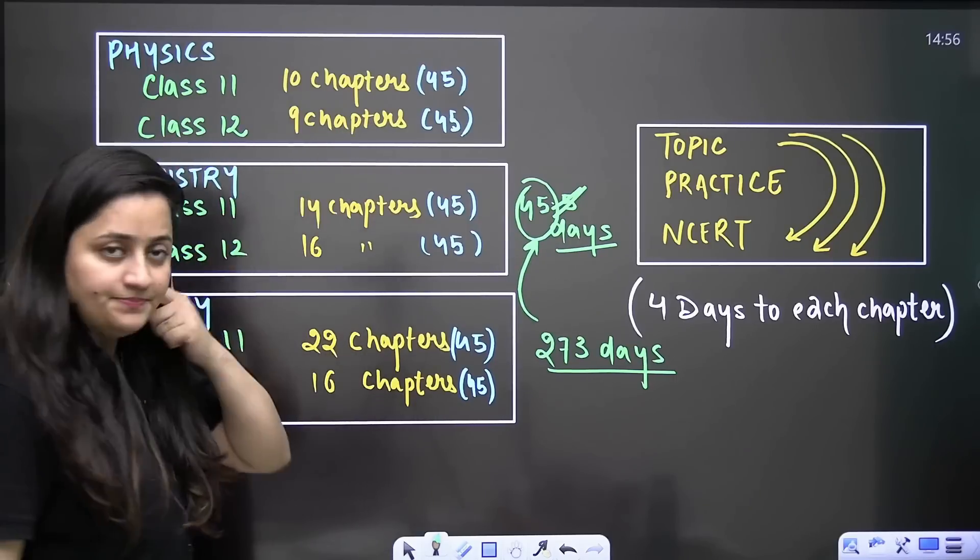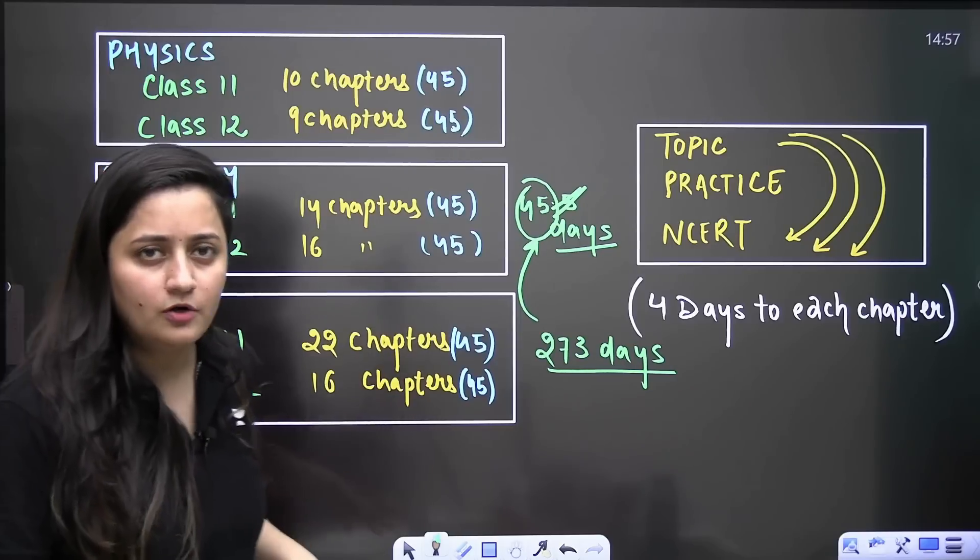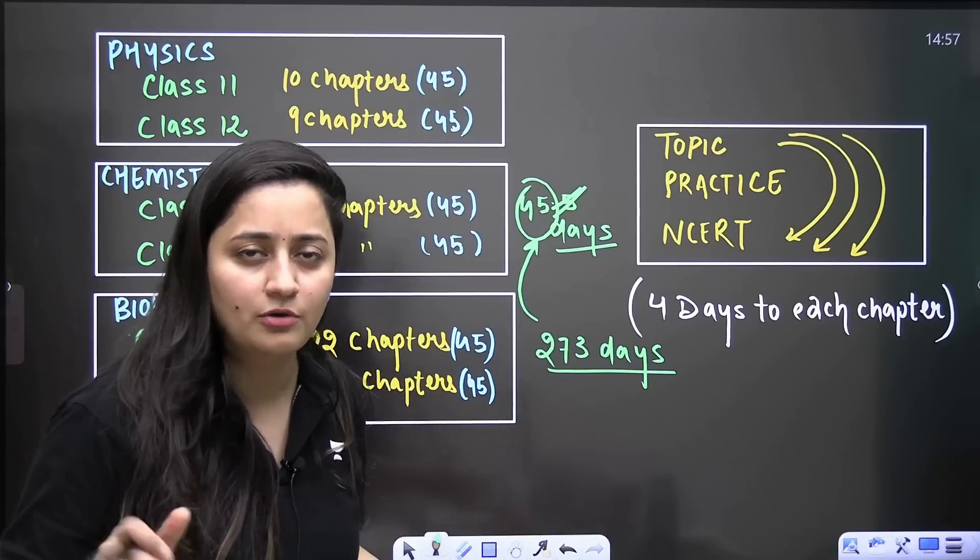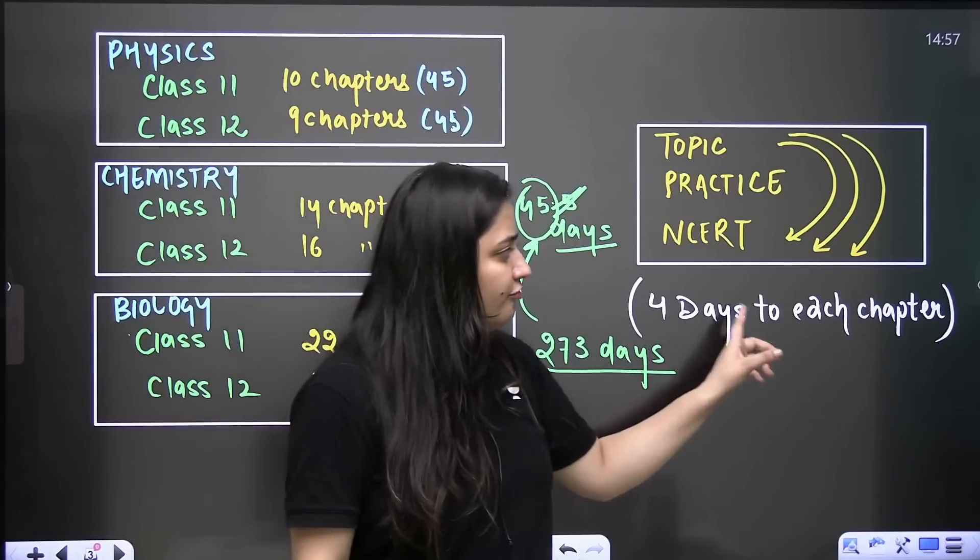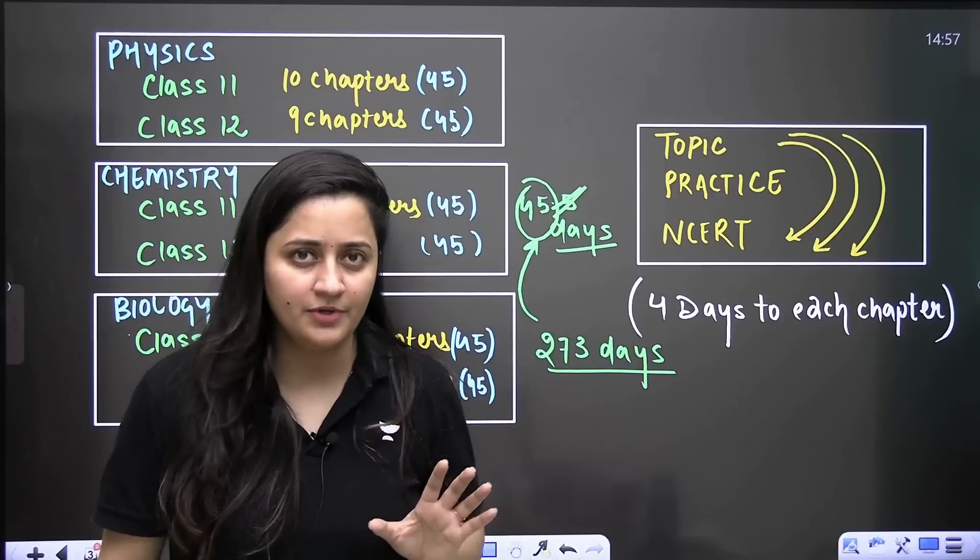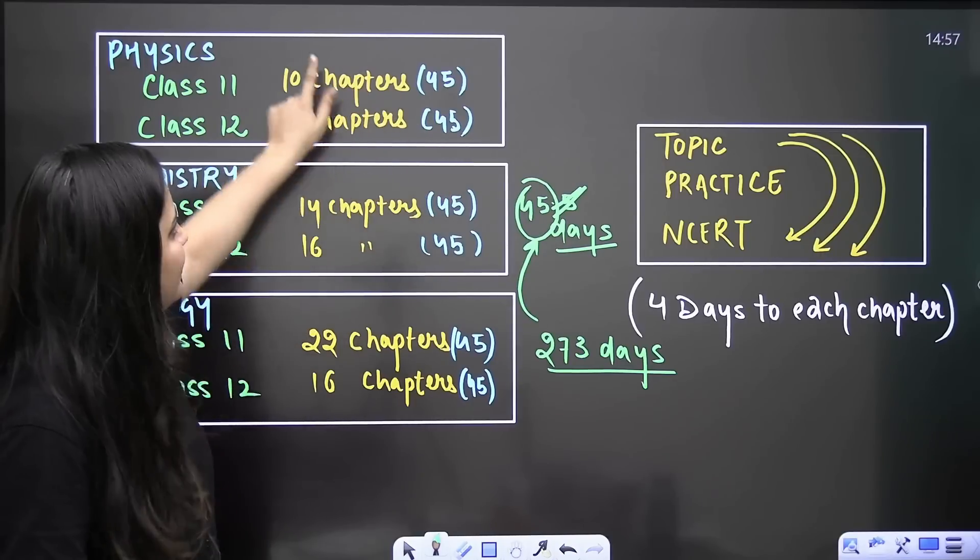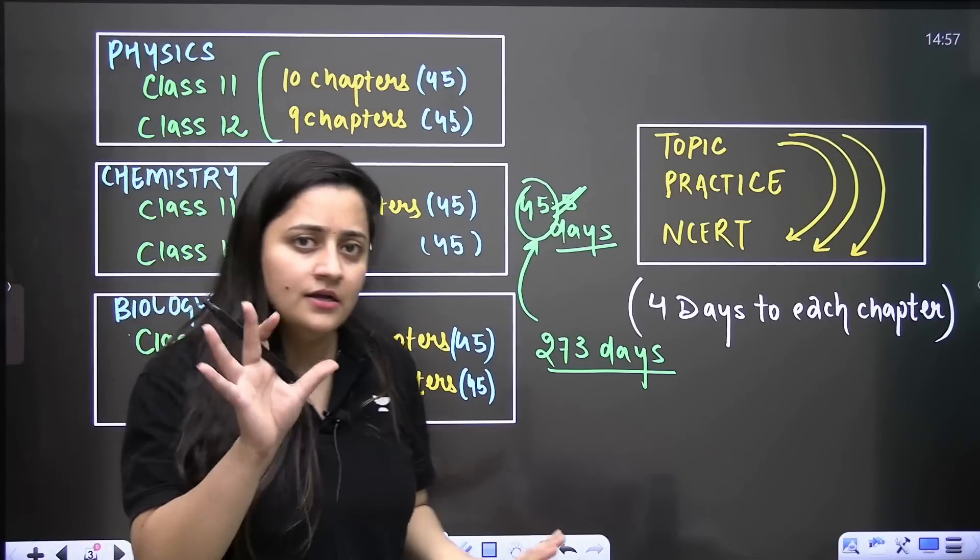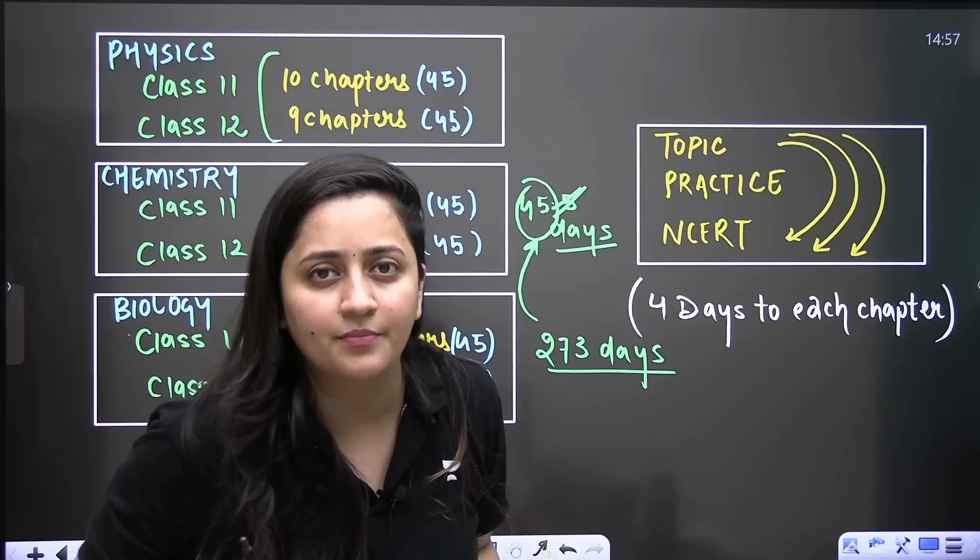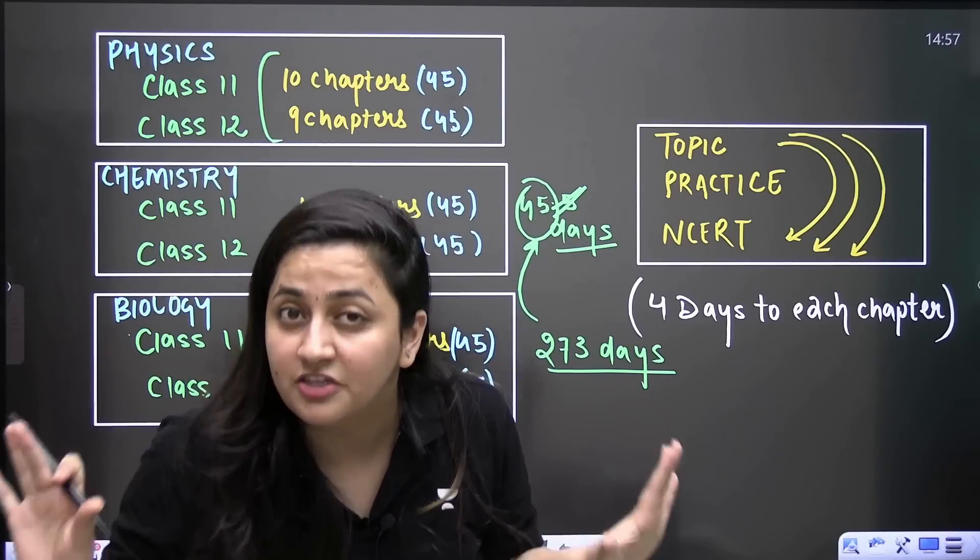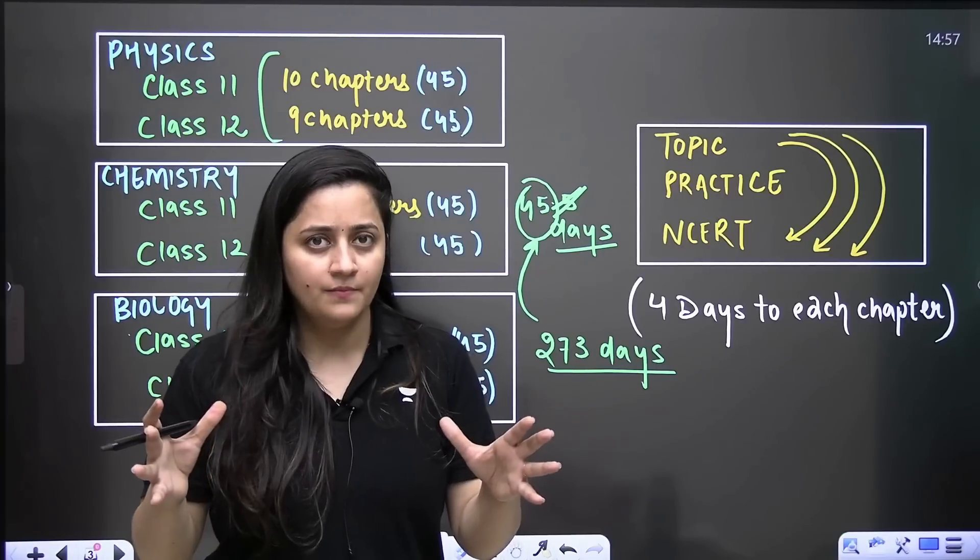It's not like that in 45 days you have to complete physics, chemistry and biology. No. Dedicatedly, you have 45 days to complete these 10 chapters, 45 days for these nine chapters of physics, and then 45 days for 14 and 16 chapters like this. This is how you can distribute this time.